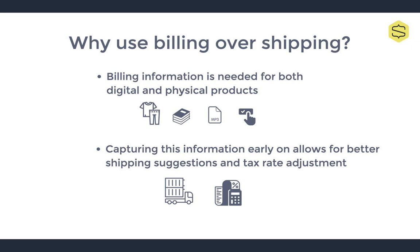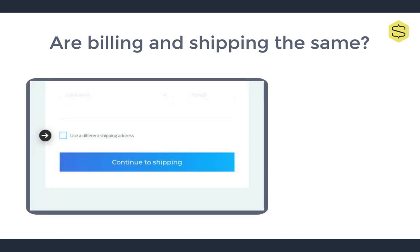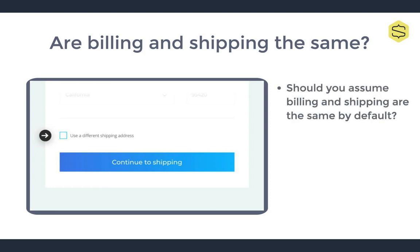But now let's turn our attention to a checkbox we've all had to check or uncheck at some point in our e-commerce experience: should billing and shipping information be the same by default? You've likely encountered this situation where you can check the box to have billing the same as shipping information. This is pretty standard practice as it simplifies the checkout process and leads to a better user experience. However, the question remains — should you mark billing and shipping information the same by default, or should you leave it up to the customers to clarify? Believe it or not, this actually depends on your product and who your customers are shopping for, and there's no universal answer.